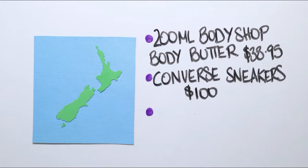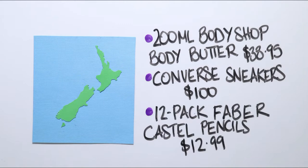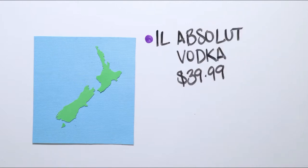A pair of Converse sneakers is about $100.00. A set of 12 coloured pencils from Faber Castell is around $12.99. And a 1-litre bottle of Absolute Vodka is around $40.00.